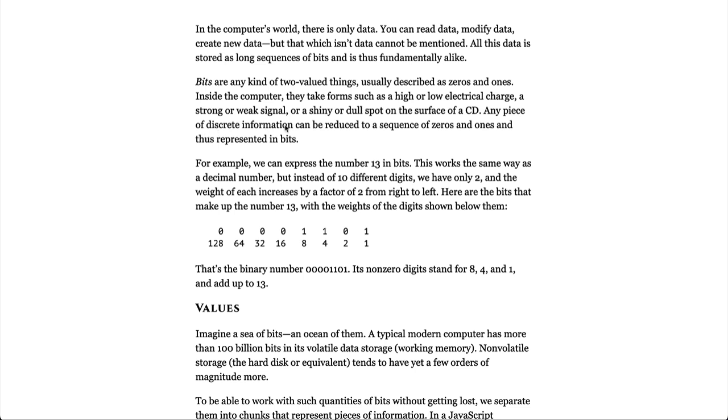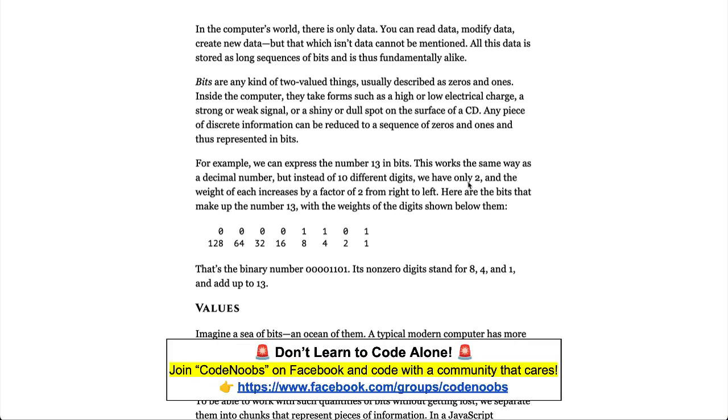Any piece of discrete information can be reduced to a sequence of zeros and ones, and thus represented in bits. For example, we can express the number 13 in bits. This works the same way as a decimal number, but instead of 10 different digits, we only have two, and the weight of each of these increases by a factor of two from right to left.